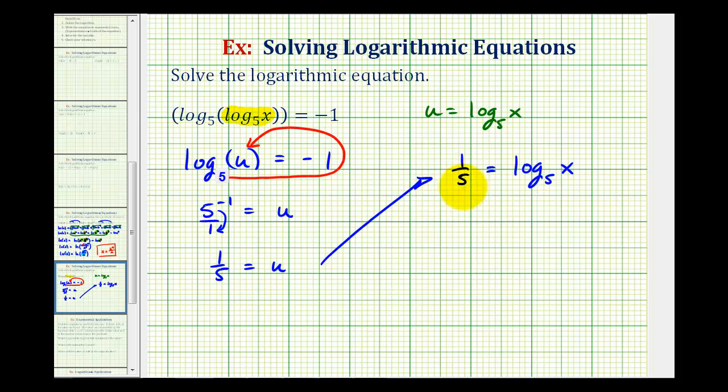And now we're going to write this log equation as an exponential equation just as we did before. So again, our base is five, our exponent is one-fifth, and our number is x. So five to the power of one-fifth equals x.